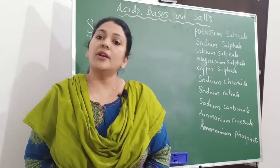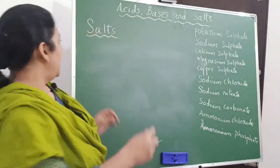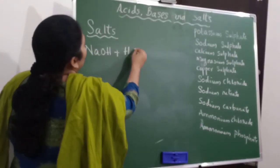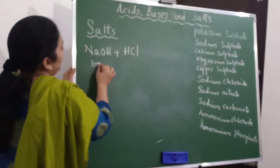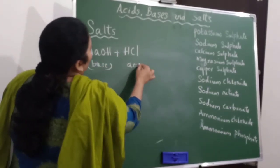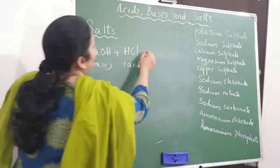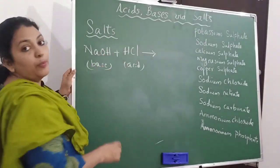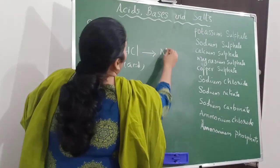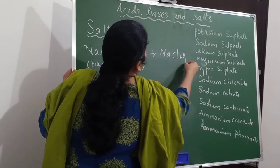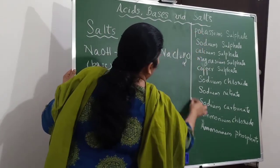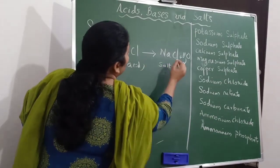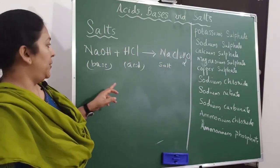How does sodium chloride form? We know that when sodium hydroxide, the base, reacts with hydrochloric acid, sodium chloride and water are produced. Sodium chloride is a salt.